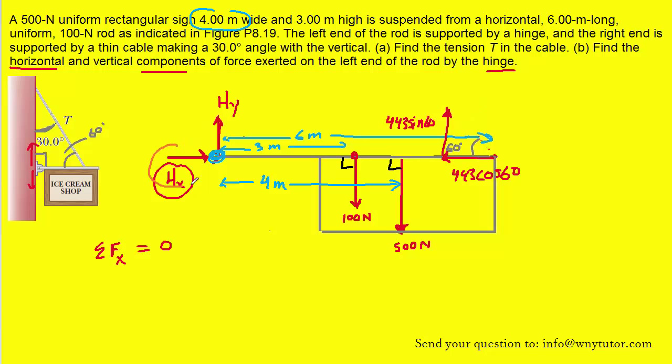The forces in the x direction are Hx and the x component of tension. Notice that the x component of the tension, the 443 cosine of 60, has a negative sign in front of it because it's pointing to the left. Very easy to solve for Hx at this point. It should get about 222 newtons, and that would be pointing to the right.